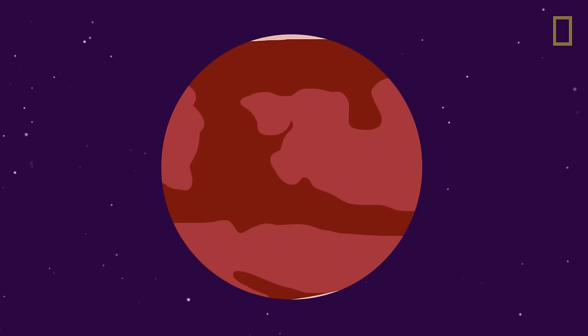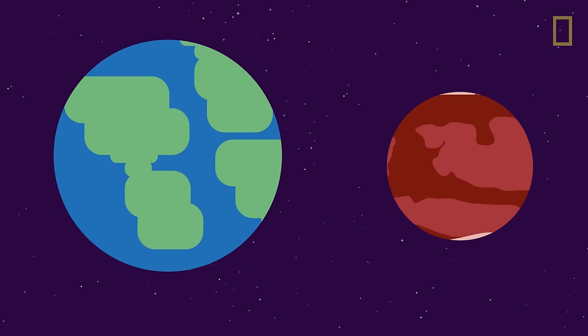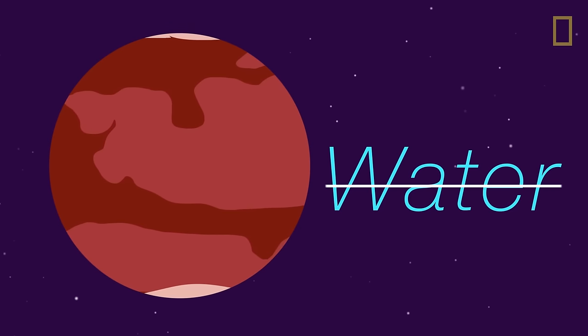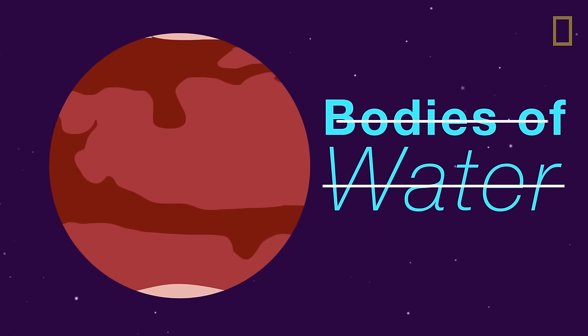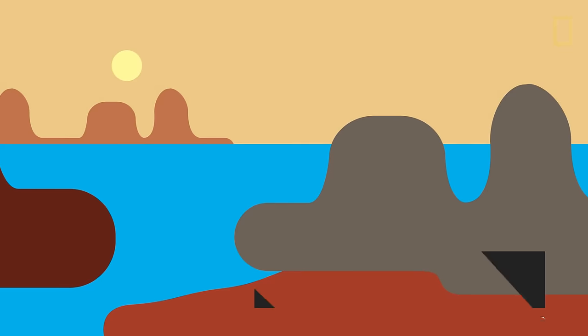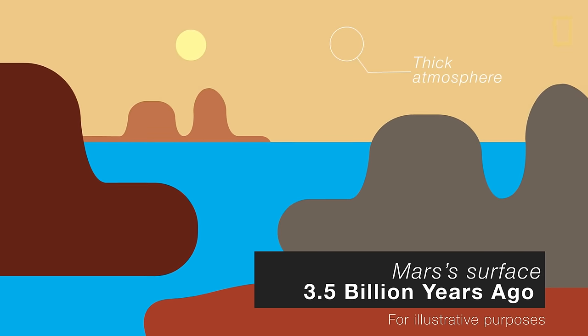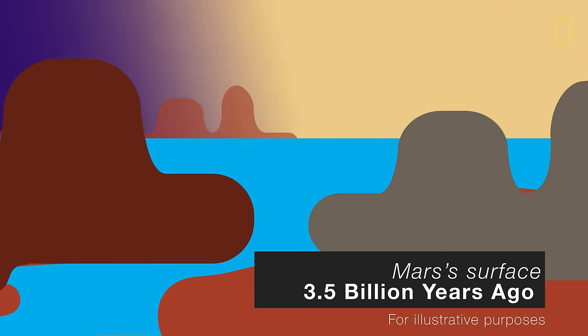Mars is about half the size of Earth, but the land mass is similar because Mars lacks the key ingredients to supporting life—water, or at least bodies of water. Back in the day, around 3.5 billion years ago, Mars had a warm and thick atmosphere that allowed oceans of water to exist.